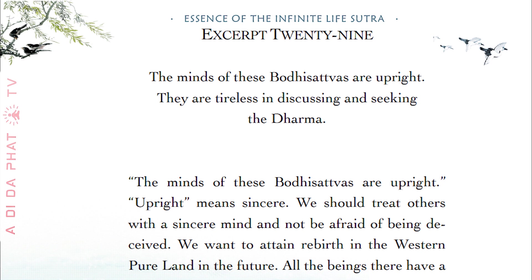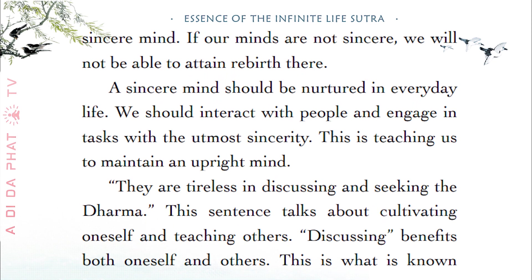Excerpt 29. The minds of these bodhisattvas are upright. They are tireless in discussing and seeking the Dharma. Upright means sincere. We should treat others with a sincere mind and not be afraid of being deceived. We want to attain rebirth in the Western Pure Land in the future — all the beings there have a sincere mind. If our minds are not sincere, we will not be able to attain rebirth there. A sincere mind should be nurtured in everyday life; we should interact with people and engage in tasks with the utmost sincerity.